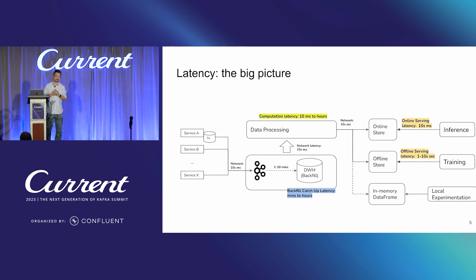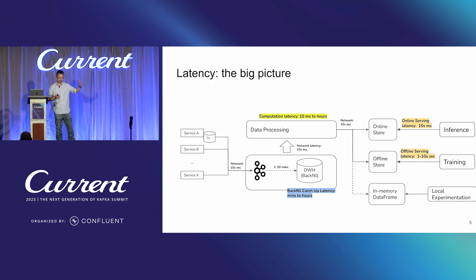In order to talk about optimization, let's start with the bigger picture. There are three different things we're going to be optimizing: latency, cost, and correctness. What we're looking at here is a modern architecture representing the feature engineering platform for a lot of companies — data flowing through microservices and transactional data stores into Kafka, backed up to a data warehouse or data lakehouse, then processed by engines like Flink or Spark, with results emitted into online store for online serving and offline store for training.